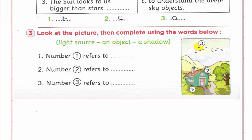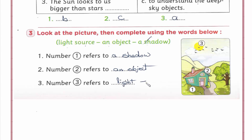Number one - ده shadow. يبقى number one refers to a shadow. Number two - object. يبقى number two refers to an object. Number three refers to a light source - مصدر للنور.